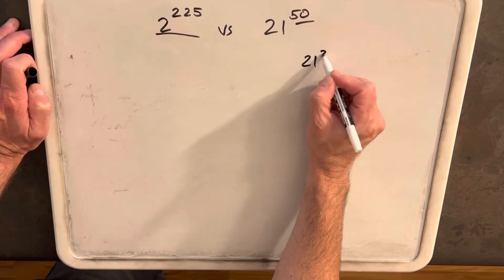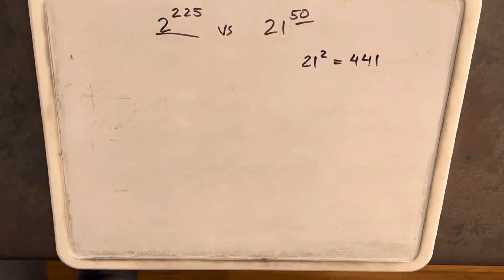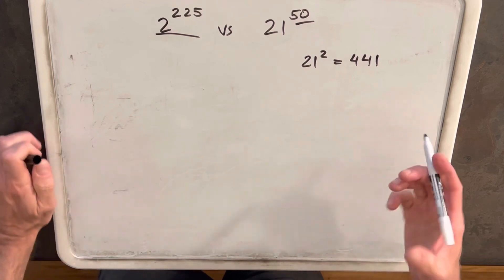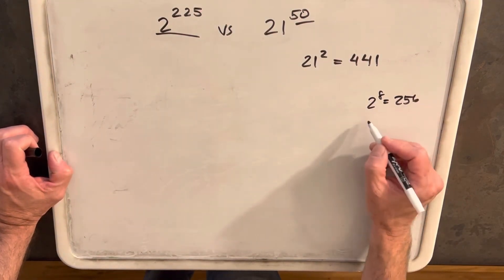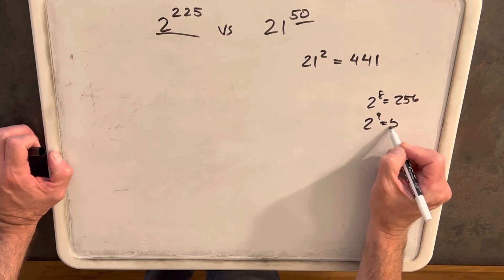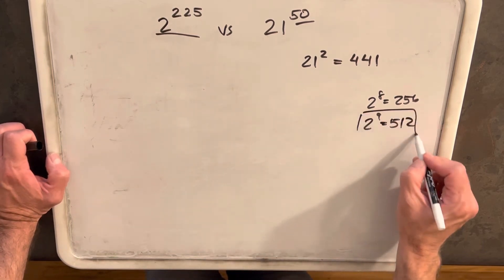So 21 squared is 441. Then the power is too close to that. We have 2 to the 8 is 256 and 2 to the 9 is 512. So they're still not great, but I'm going to try this one and see what happens.